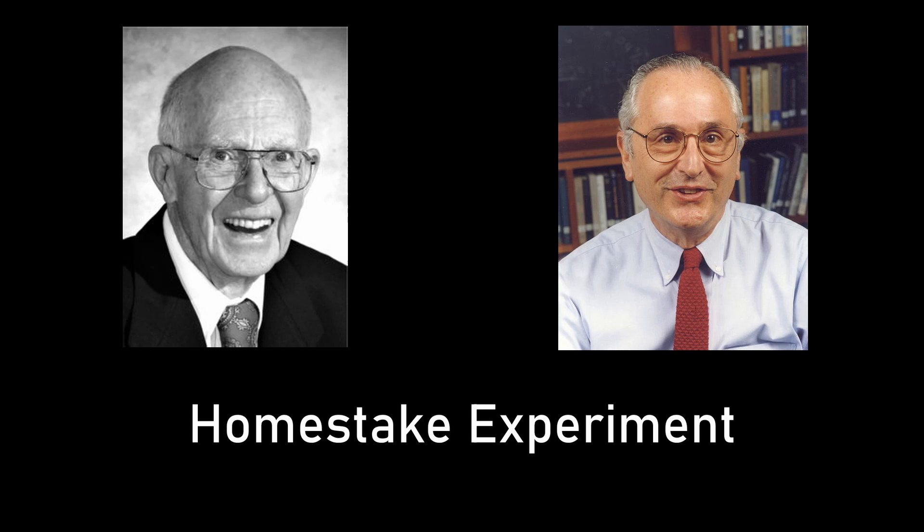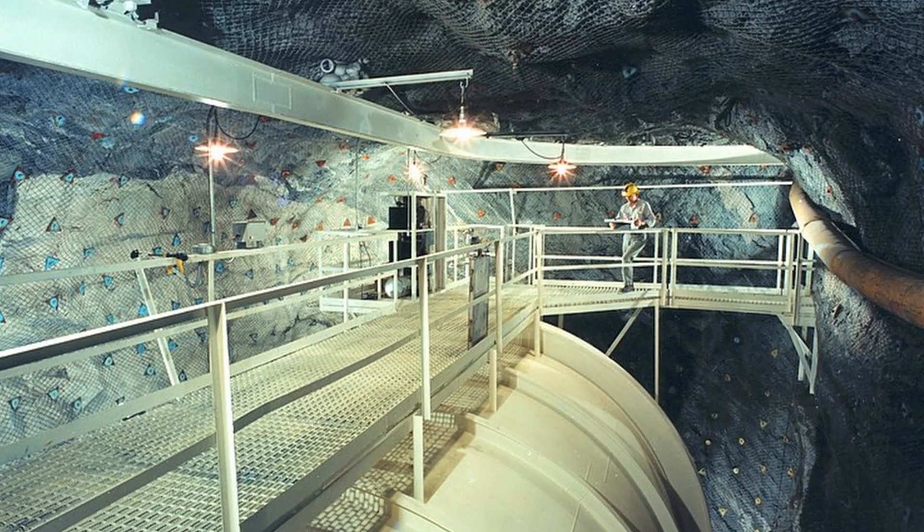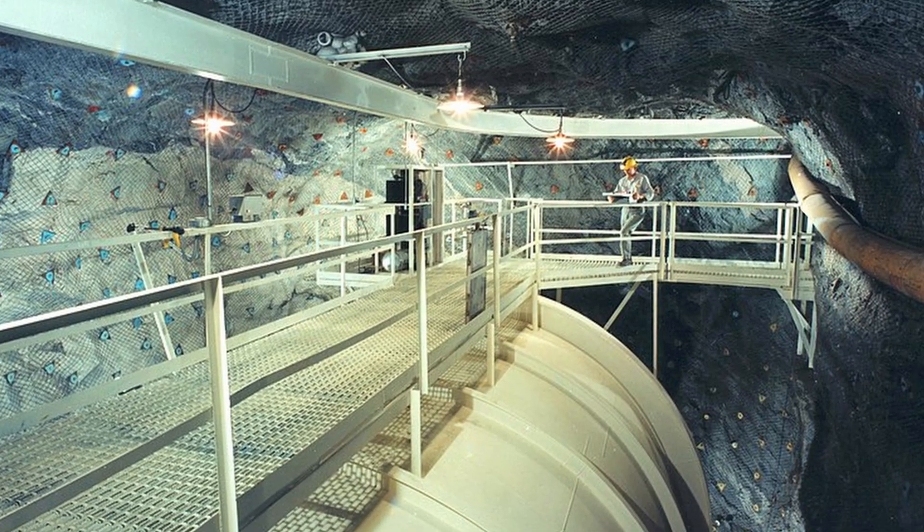In the 60s, physicists Ray Davis and John Bacall set out to measure the number of neutrinos our Sun emitted, in an attempt to compare this to the number predicted by the best solar model at the time. The Homestake experiment, as it was known, made use of a chlorine based detector 1500 meters underground in South Dakota, with the neutrinos being measured due to their interaction with chlorine producing radioactive argon. So if you could measure the amount of argon in your detector, you could calculate the number of neutrinos.